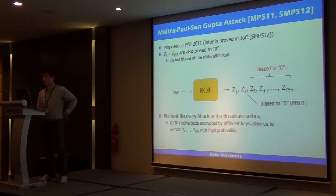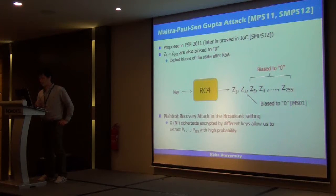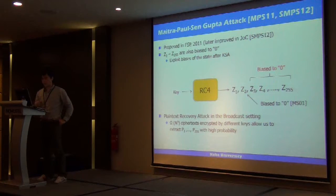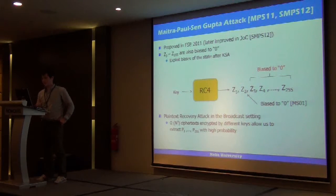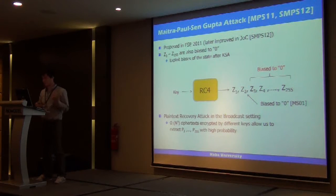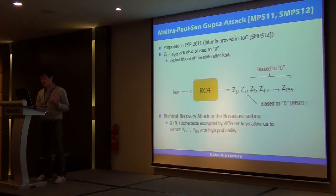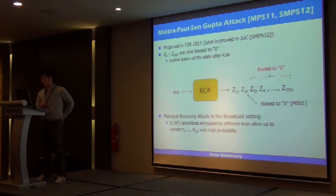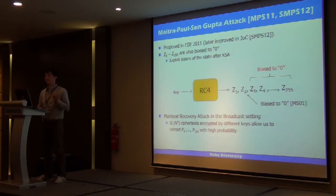This attack was later improved. They showed that bytes z3 through z255 of the keystream are also biased. By using these biases, similar to the previous approach, plaintext in the broadcast setting can be recovered. Given N ciphertexts with different keys, this allows recovery of up to 255 bytes of plaintext from only the ciphertext.